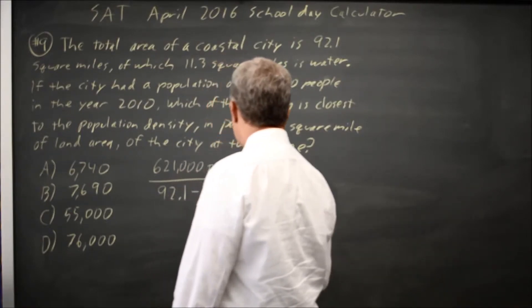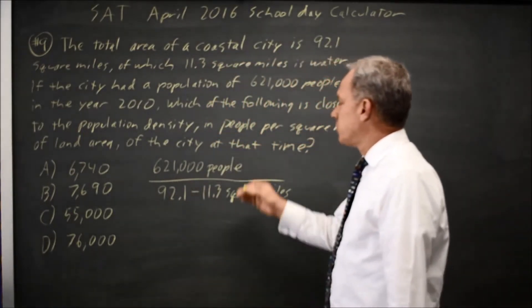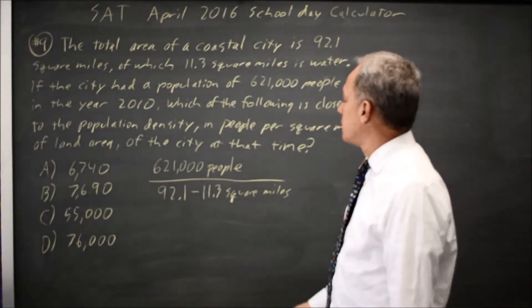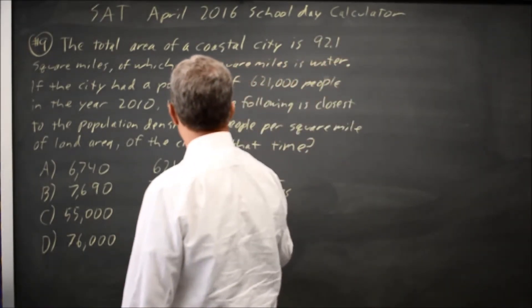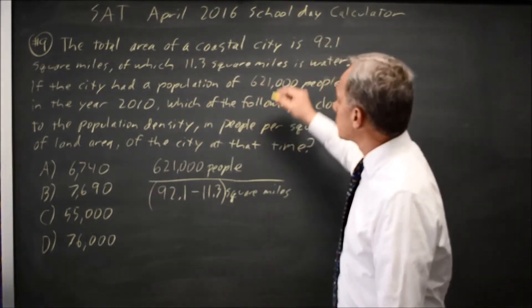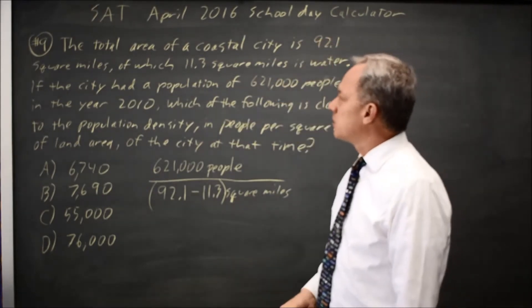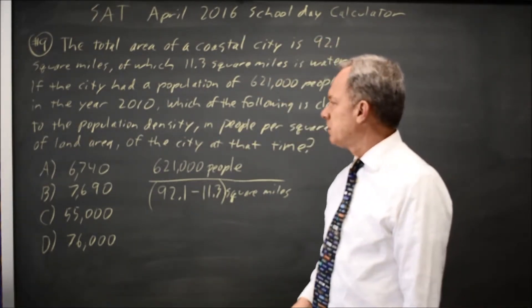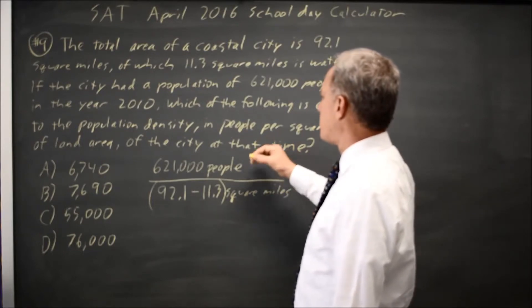And that will give you people per square mile, because we're dividing people by square miles. And the 92.1 minus 11.3 gives you the total area of the city minus the water area is the total land area, which they're asking people per square mile of land area.